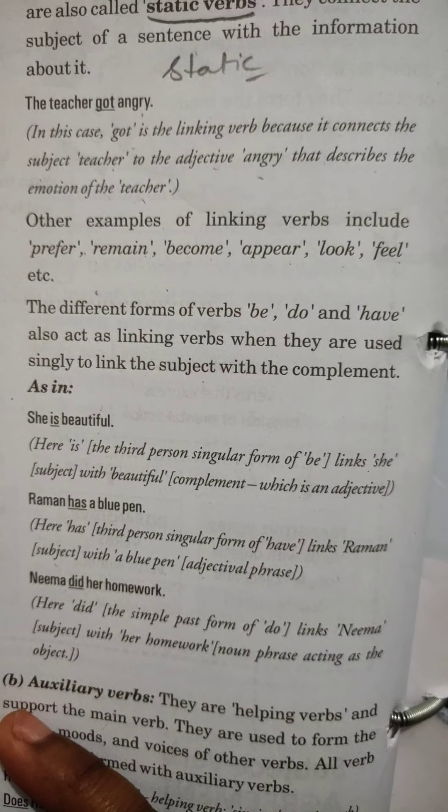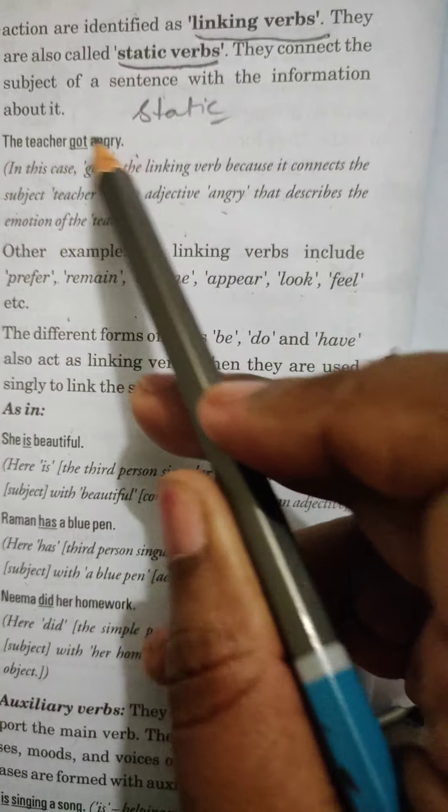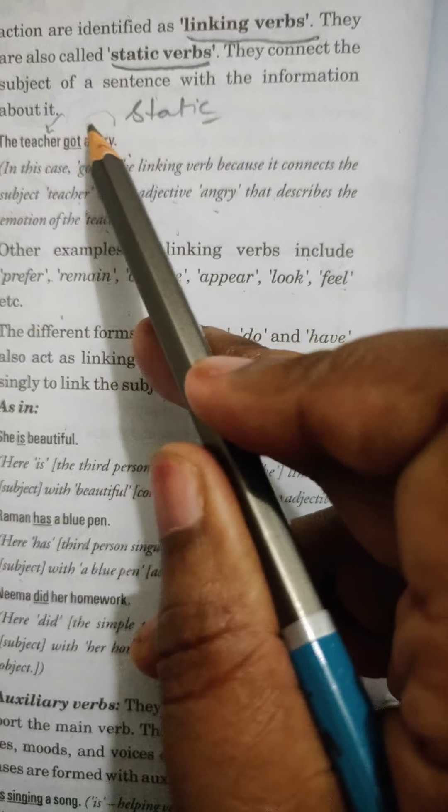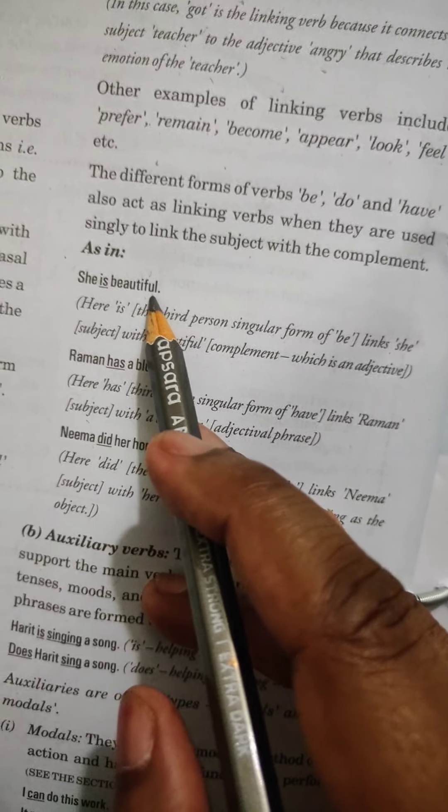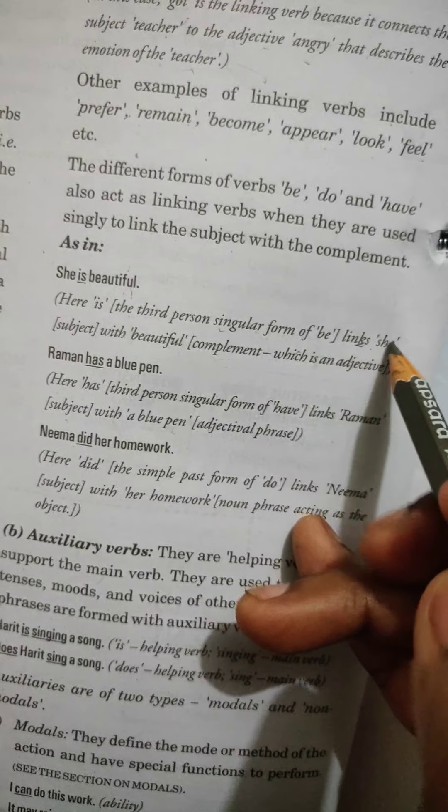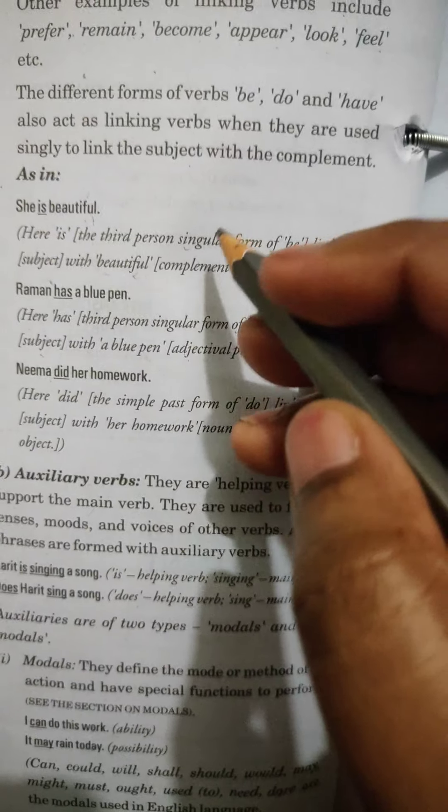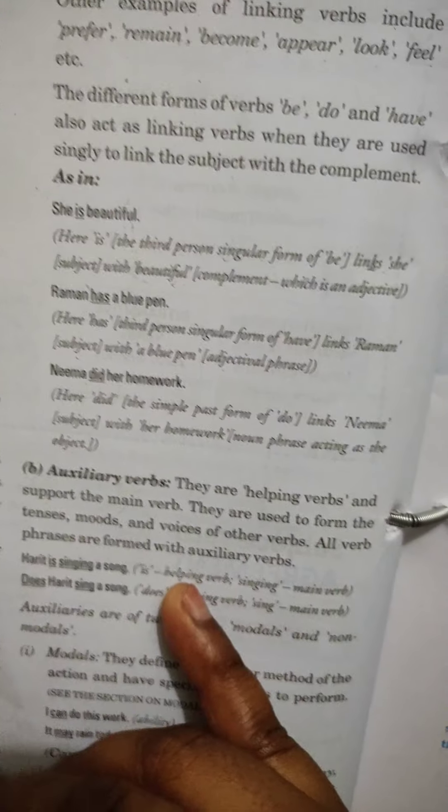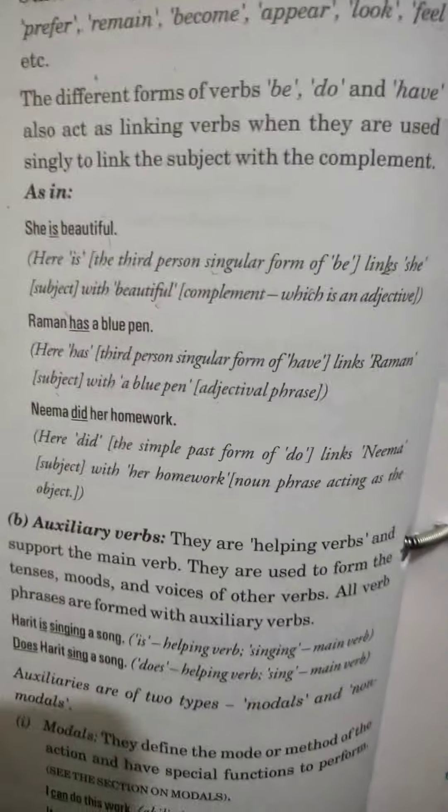Other examples of linking verbs include prefer, remain, become, appear, look, feel, etc. See, here body involvement was there. Therefore, it was dynamic verbs. But what is happening this side? The teacher got angry. Now, her emotion is described with this word got. So, this will be known as linking verb or static verbs. She is beautiful. Here the third person singular form of be links she like subject with beautiful complement. These are the details of identifying the verb. How it works and all that you will have to see how lexical and auxiliary verb, they are distributed and they give different meaning to the verbs.